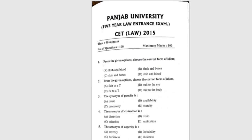Question 1: From the given options, choose the correct form of idiom. The correct answer is option A, flesh and blood. Question 2: From the given options, choose the correct form of idiom. The correct answer is A, suit to a T. Question 3: The synonym of paucity is — the correct answer is D, scarcity.